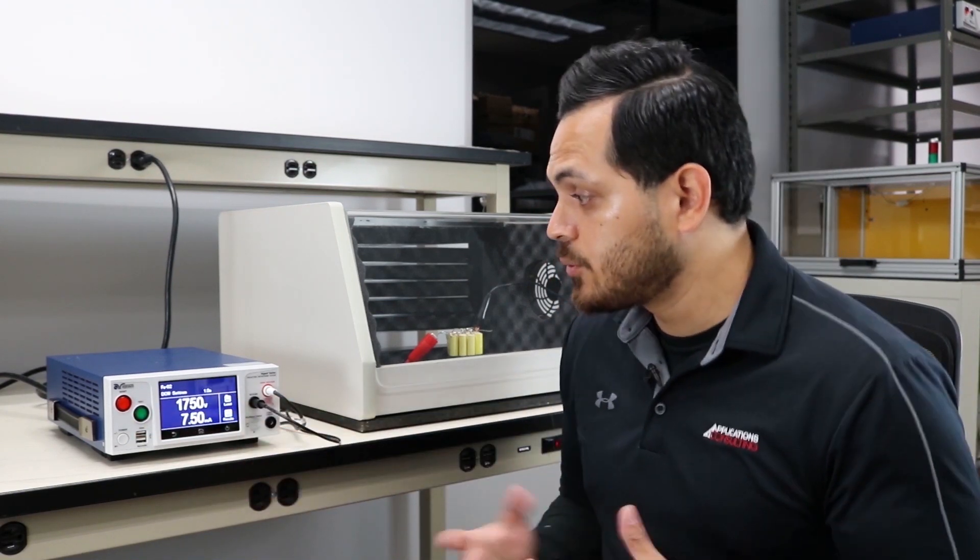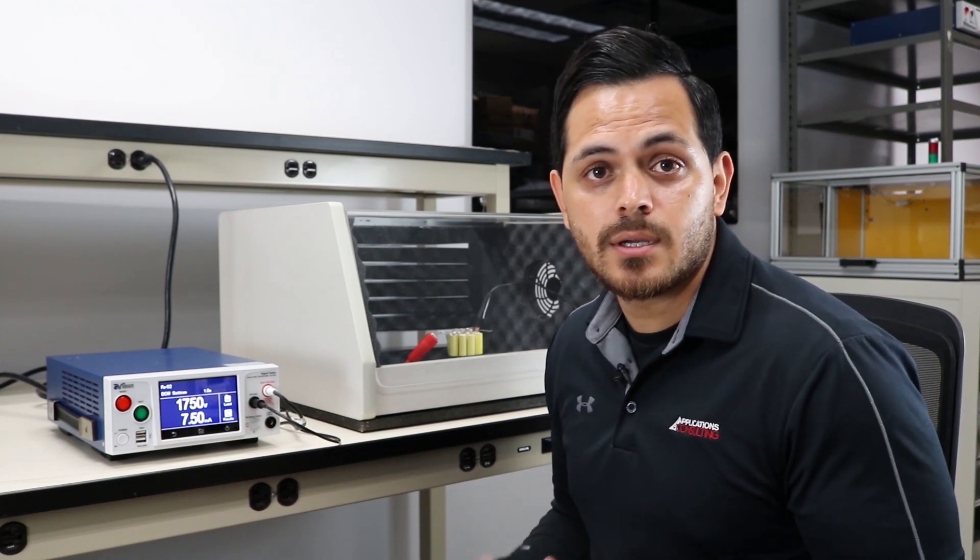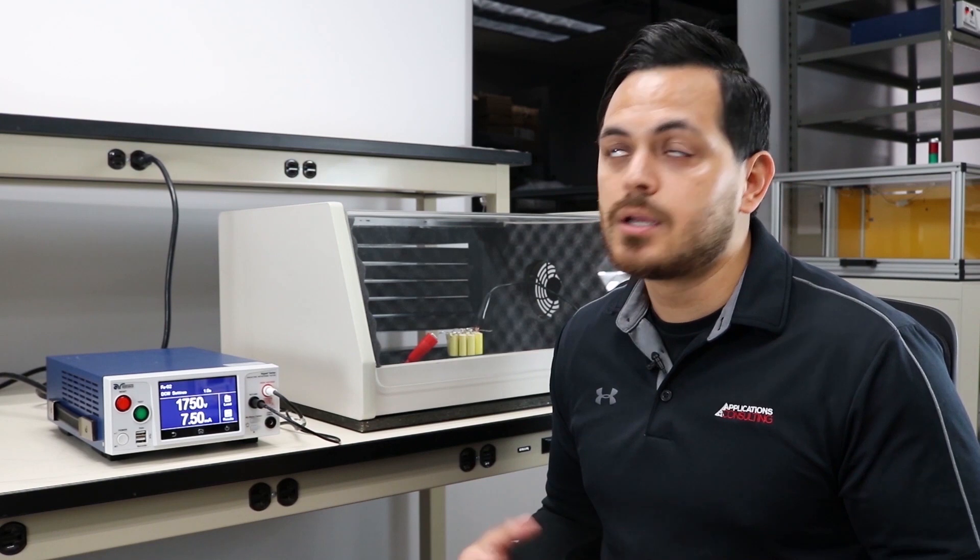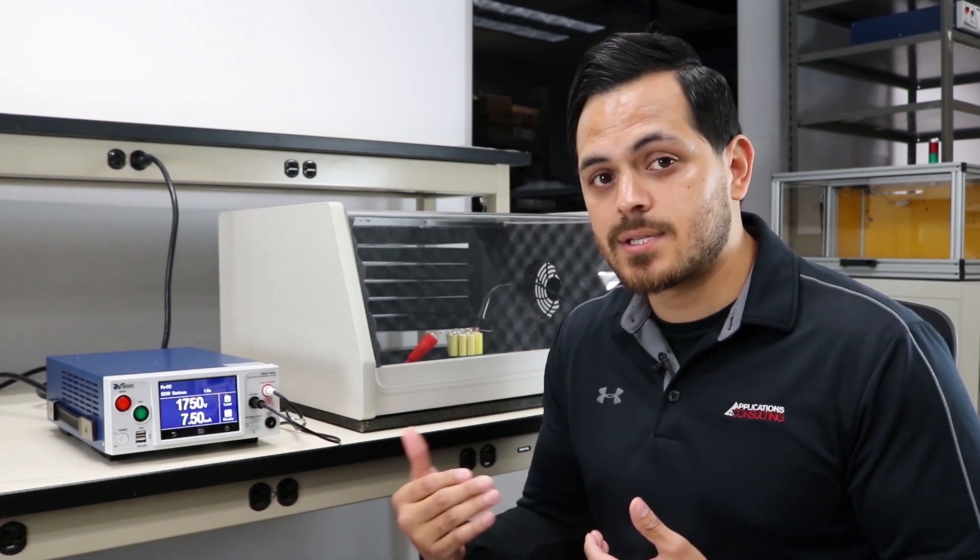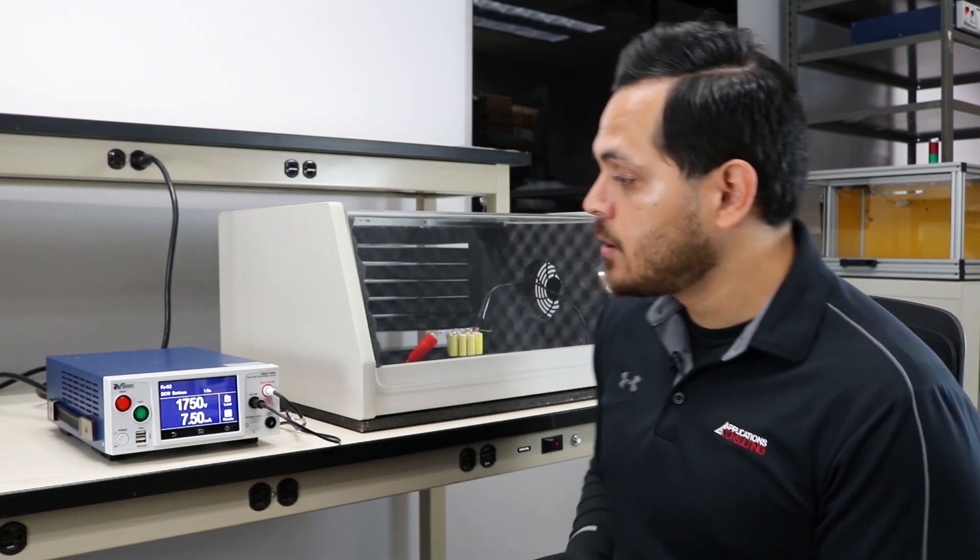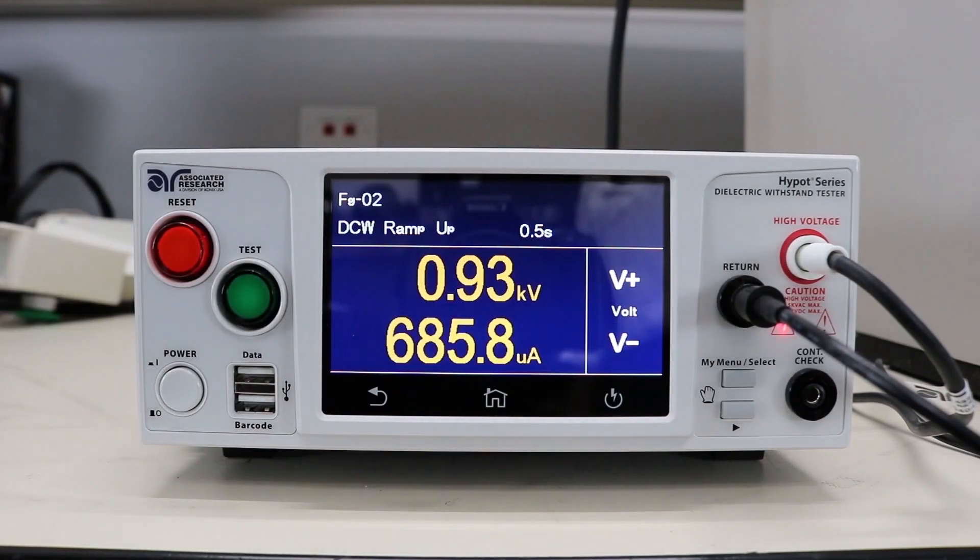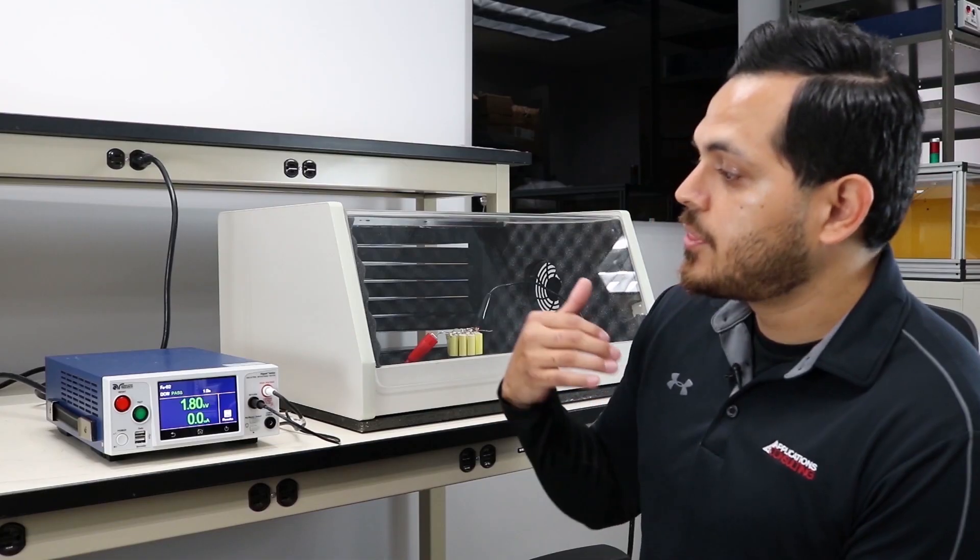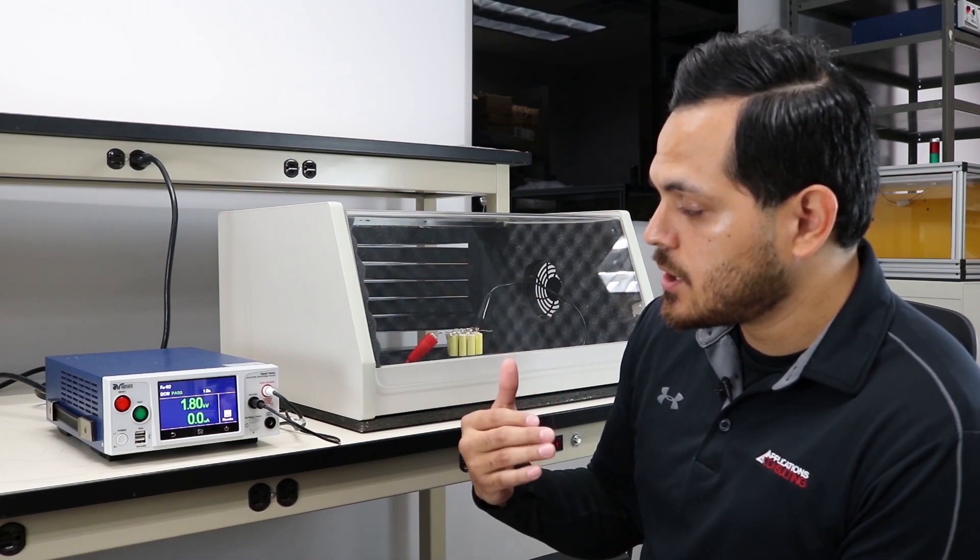So here we are, same DUT, 1750 volts which is the equivalent of the AC peak voltage of the test we just ran, which is how standards outline the necessity to make sure you're testing at an equivalent voltage. We're going to run this test.